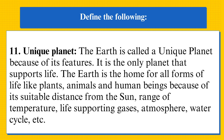Now define the following. Unique planet: the earth is called a unique planet because of its features. It is the only planet that supports life. The earth is the home for all forms of life like plants, animals and human beings, because of its suitable distance from the sun, range of temperature, life supporting gases, atmosphere, water cycle, etc.